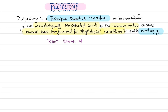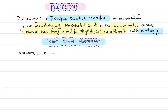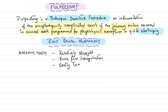Regarding root canal morphology, the anterior primary teeth have relatively straight canals with few irregularities and are easily treatable.